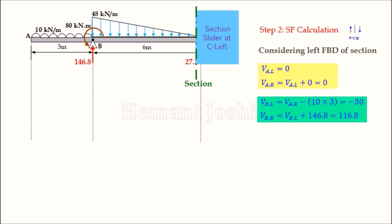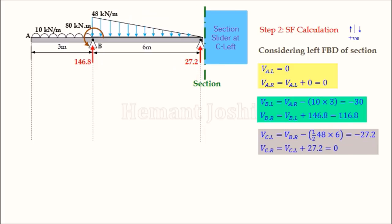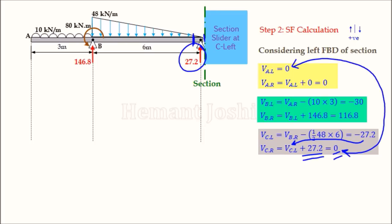VC_left: from VB_right, newcomer is the UVL acting downward — area = 0.5 × 48 × 6 = 144 kN, negative. So VC_left = 116.8 − 144 = −27.2 kN. Wait — the value shown is +27.2, confirming sign. VC_right: newcomer is RC = 27.2 kN upward (positive), giving VC_right = 0. We start with 0 and end with 0 — our first check is verified.